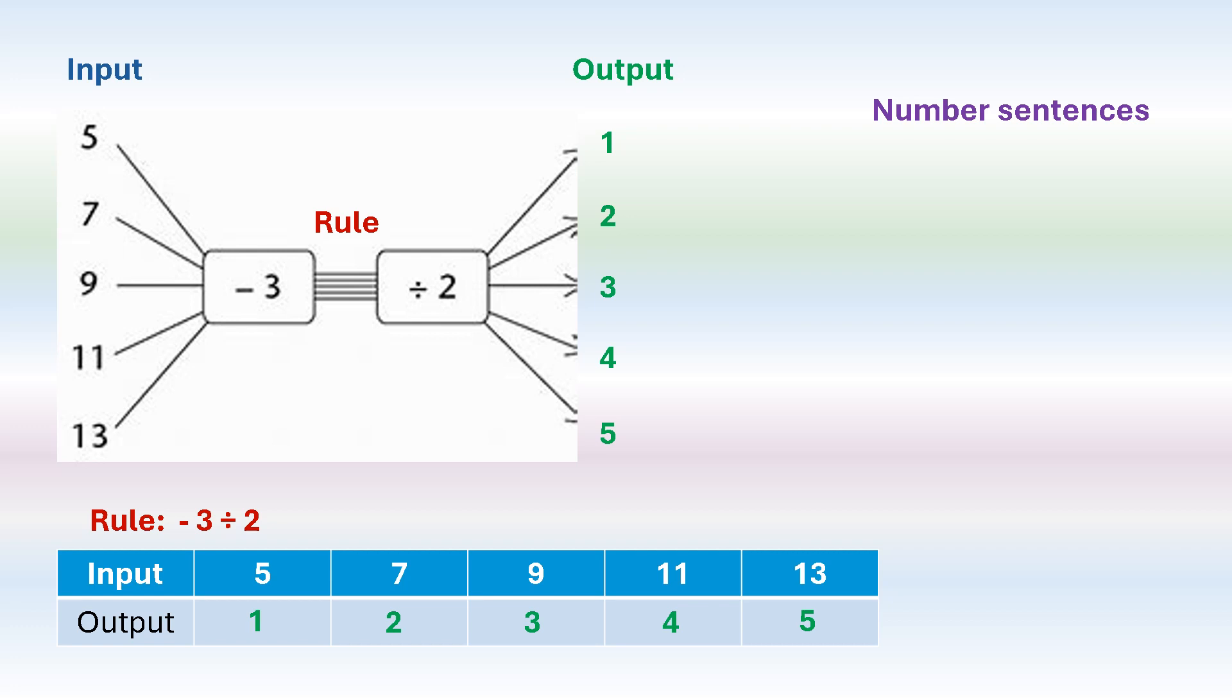So basically, to write a number sentence using the flow diagram, we need the input, we need the rule, and we say it's equal to the output. So let's look at the 5 in the input and the rule. The rule is minus 3 divided by 2. So we say 5 minus 3 divided by 2 is equal to 1.